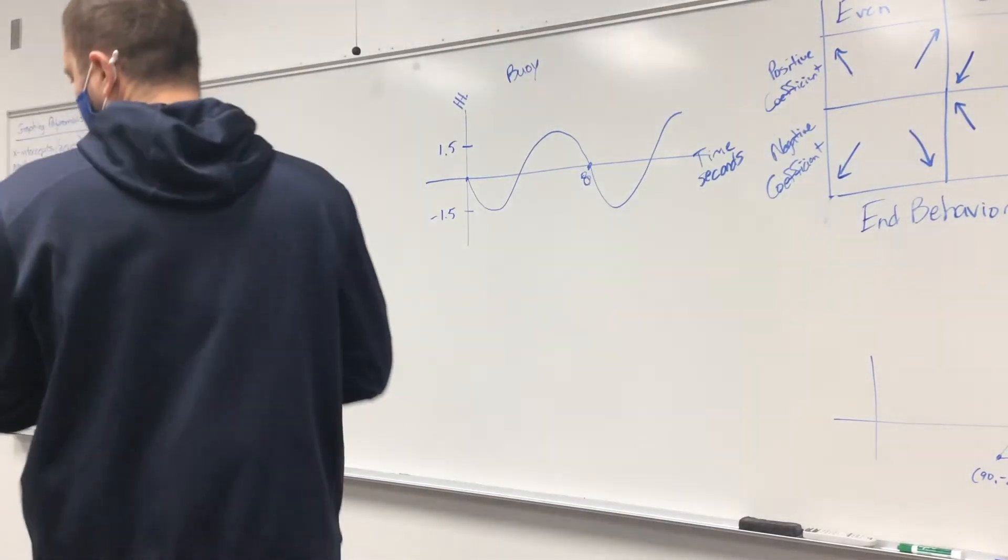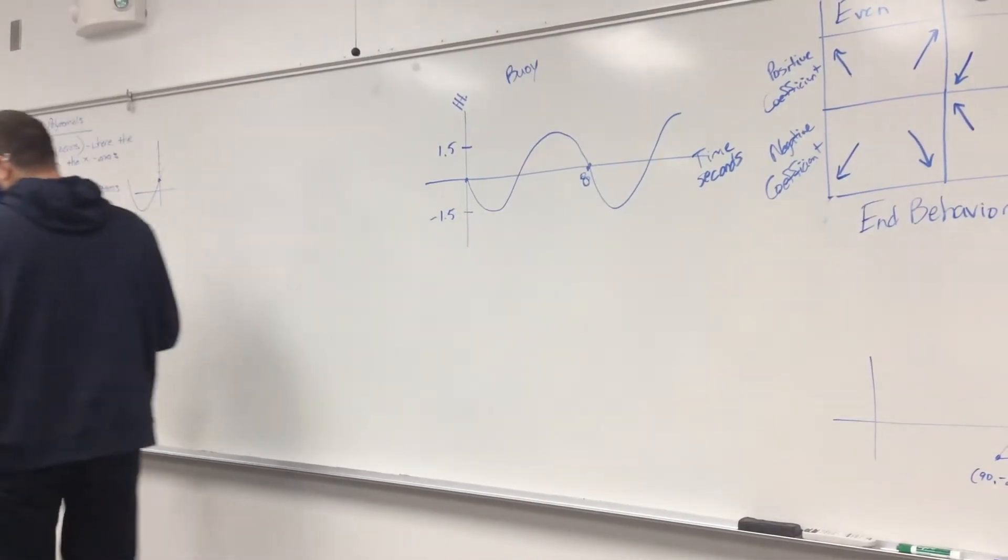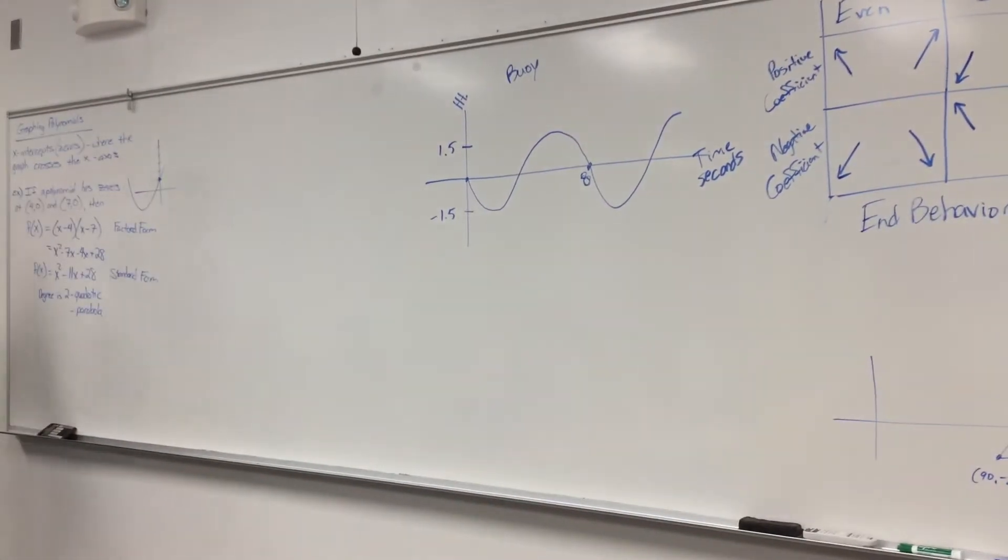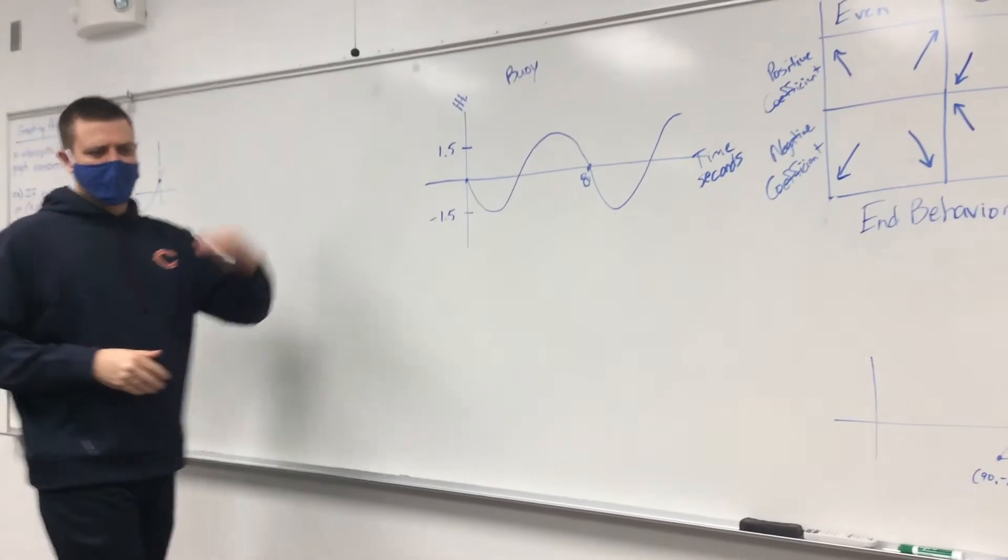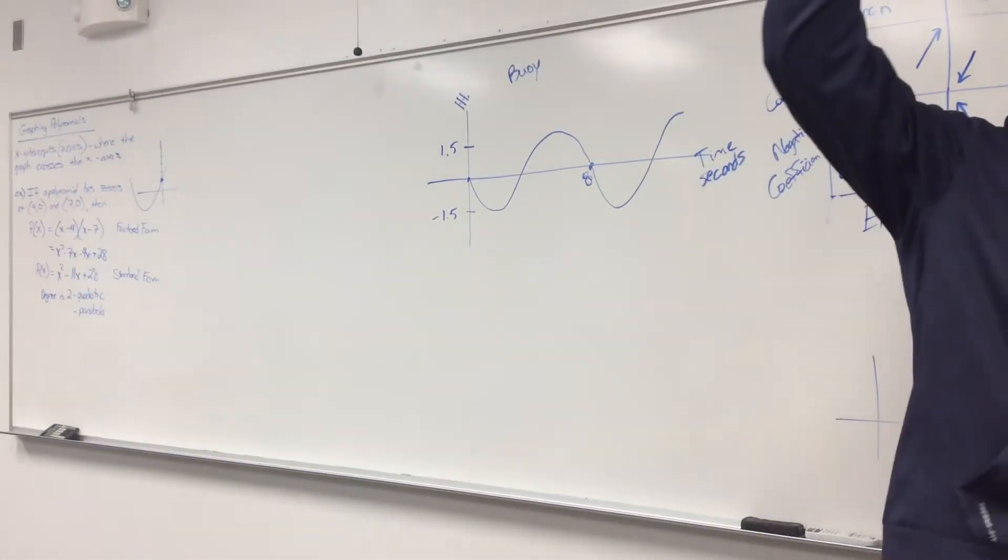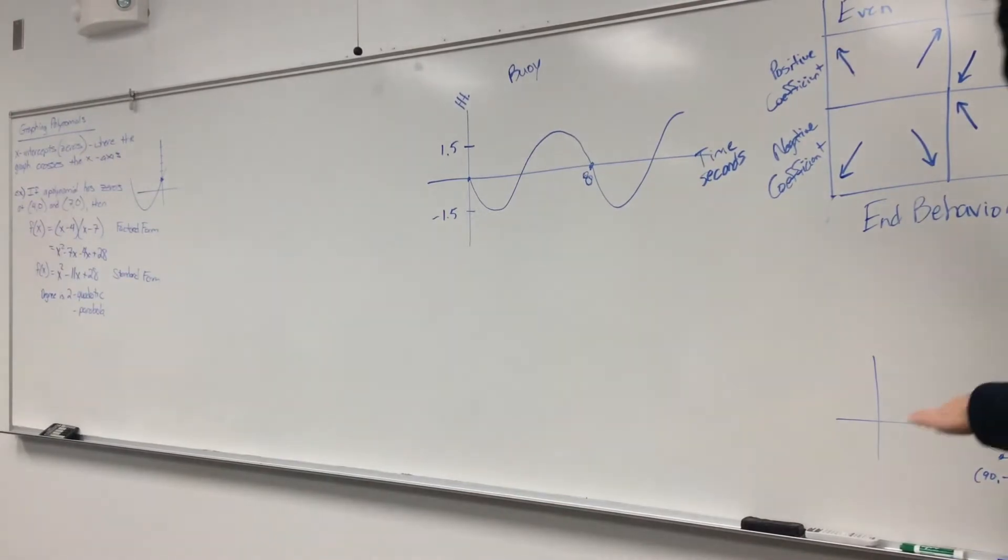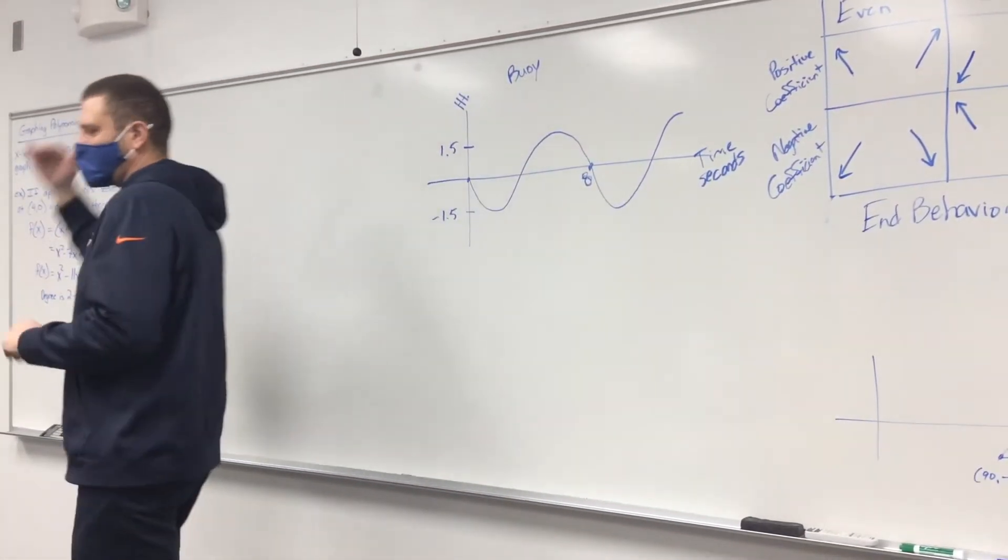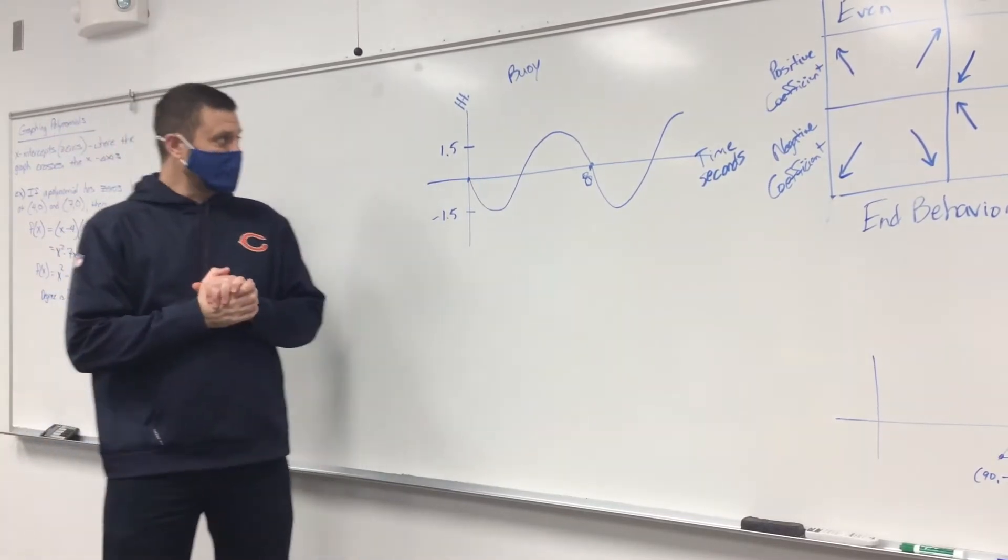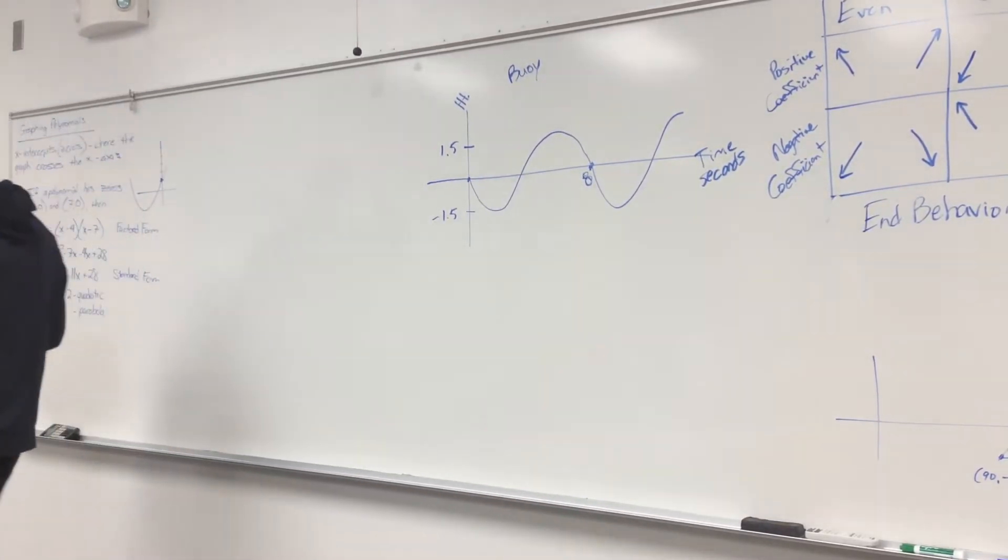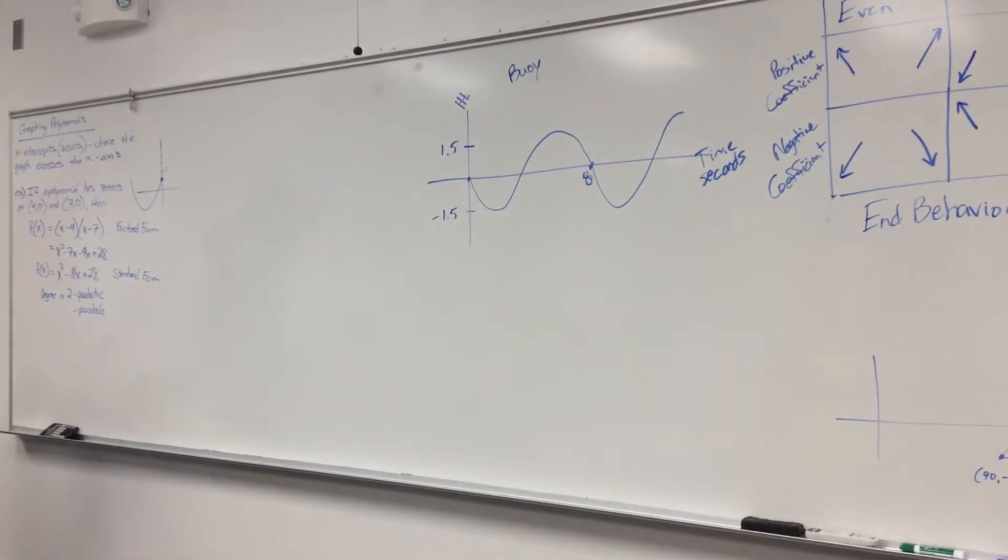Okay, so in this buoy problem from your practice, it said the buoy bobs up and down in the bay. The difference between the high point and the low point was three feet. It takes eight seconds to go from its high point down to its low point and back up to its high point.